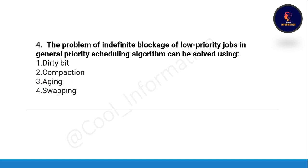Question number four: the problem of indefinite blockage of low priority jobs in a general priority scheduling algorithm can be solved using what? Option A: dirty wait, option B: compaction, option C: aging, option D: swapping. The correct option is option number three, which is aging.